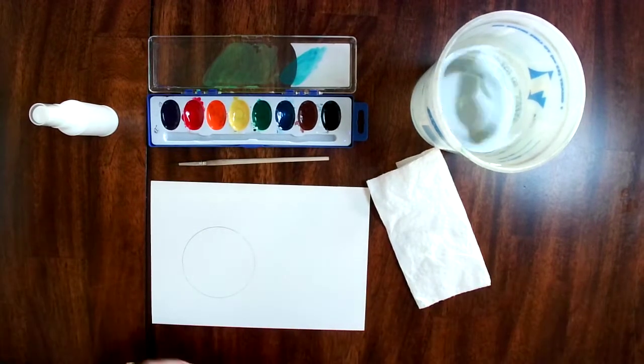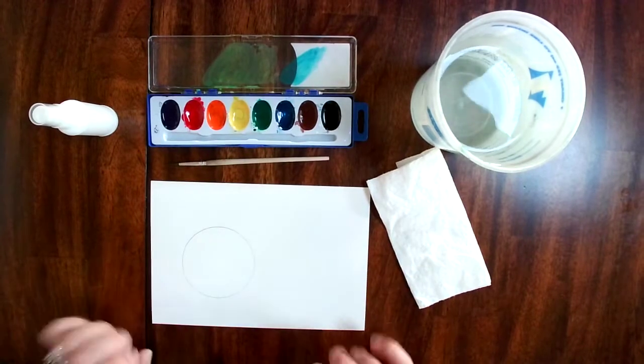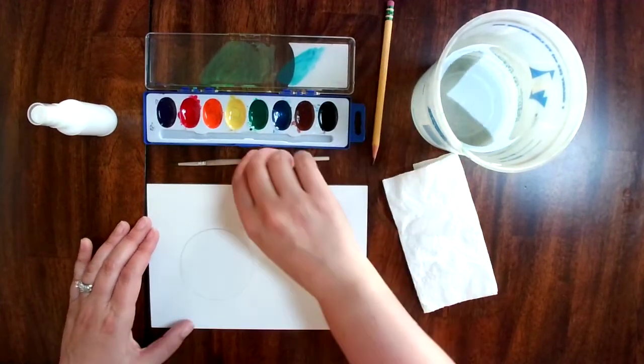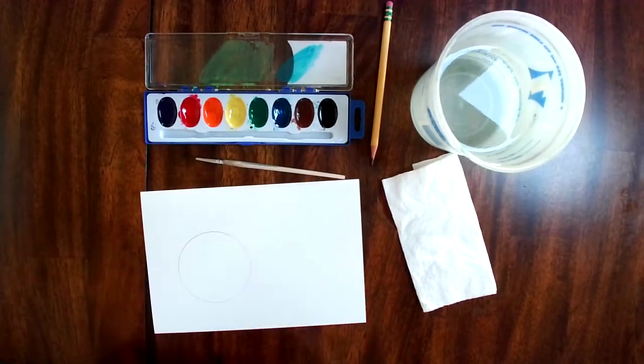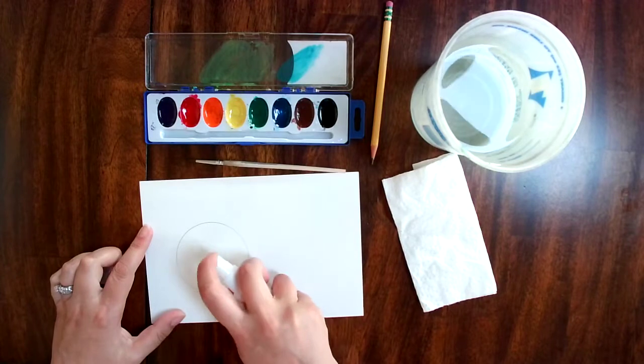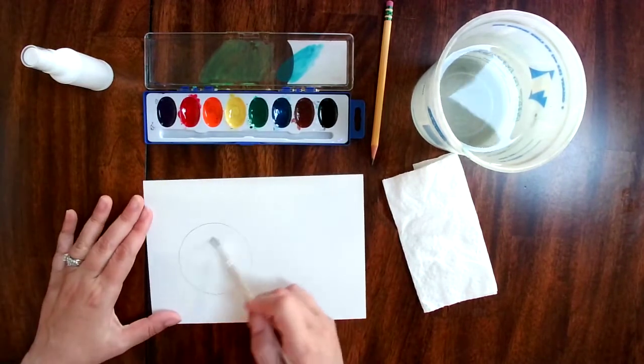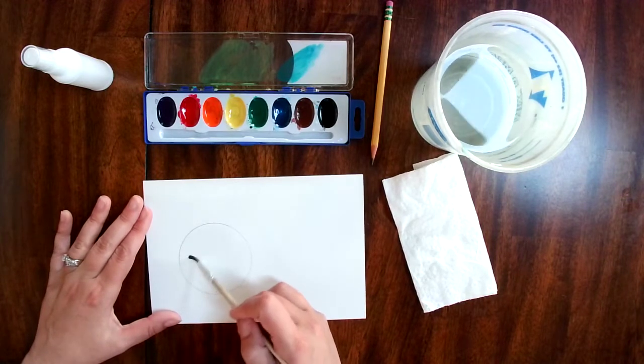If you don't have anything to trace, you can just freehand it and that's okay too. To start, I want this to be really wet on the inside, so I'm going to use my spray bottle, put a spray right in the middle, and then start spreading that water around. I don't want it to go outside the line.